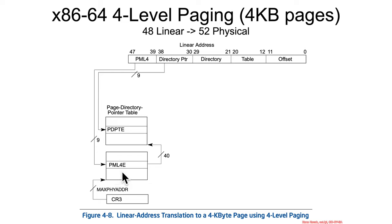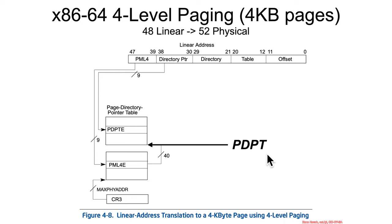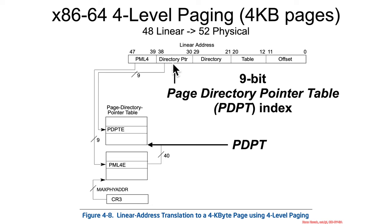So what did the page map level four entry give us? It gave us 40 bits of a physical address where the MMU could find the page directory pointer table. The MMU can take nine bits from here and use it to index to here, the page directory pointer table entry.